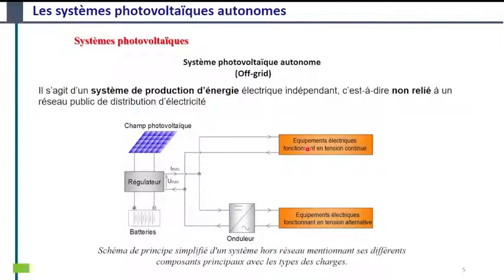On trouve principalement les composants suivants dans un système photovoltaïque. On trouve le champ photovoltaïque, ou bien le générateur photovoltaïque, qui se compose de modules photovoltaïques connectés entre eux par des connexions en série, parallèle, ou série-parallèle. On trouve aussi le régulateur de charge, qui est un gestionnaire de flux d'énergie entre les différents composants du système.